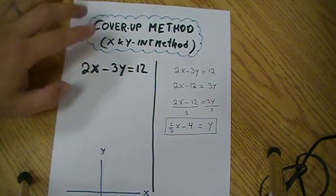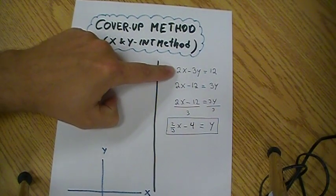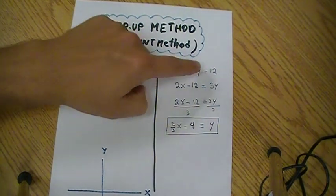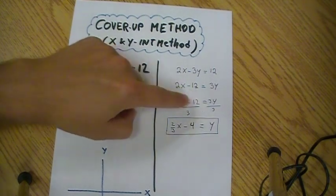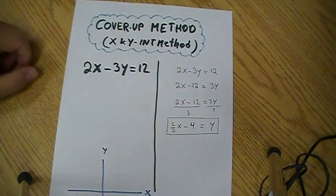If we don't know how to use this method, the cover-up method, or the x and y-intercept method, we're probably going to do like this: 2x minus 3y, and we're going to isolate for y by moving the minus 12, dividing everything by 3, and we end up having 2 thirds x minus 4 is equal to y, and then we can plot it.